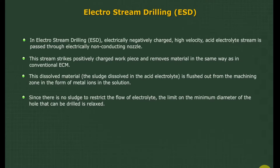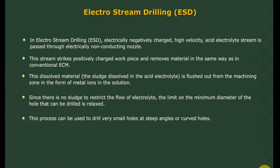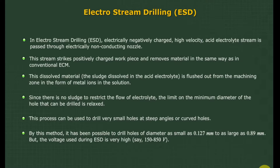Since there is no sludge to restrict the flow of electrolyte, the limit on the minimum diameter of the hole that can be drilled is relaxed. This process can be used to drill very small holes at steep angles or curved holes. By this method, it has been possible to drill holes of diameter as small as 0.127 mm to as large as 0.89 mm. However, the voltage used during ESD is very high — 150 to 850 volts.